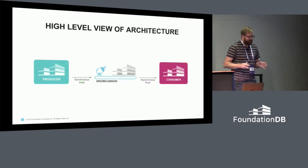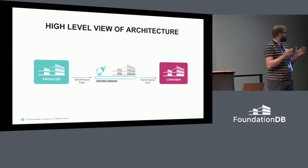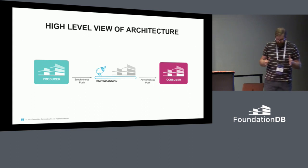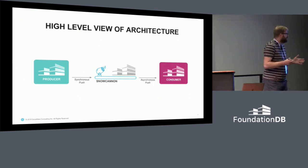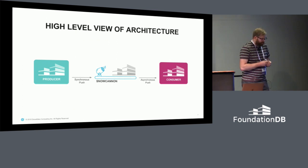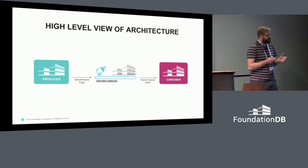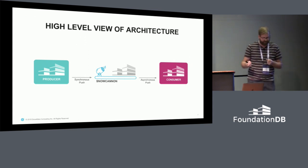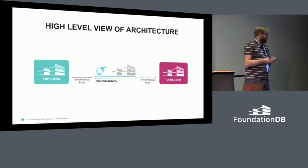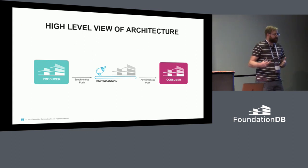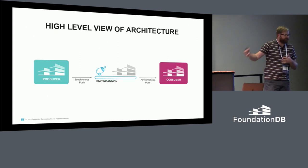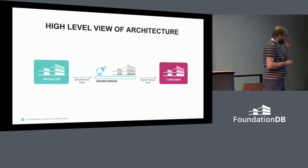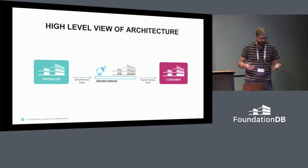The way we implemented this — at a high level, David will go into more detail — is we built a second system called Snow Cannon, which is a full cluster implementing a distributed queuing system. Think of it as something like Kafka. The main FDB cluster will then synchronously stream all its transactions — the mutations of those transactions — to Snow Cannon. Snow Cannon persists this to disk, and then asynchronously pushes it to a secondary cluster, or even a third or fourth, however many you want. Because of the asynchronous nature of the second part, you can bring down another cluster for maintenance or upgrades.